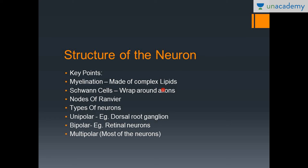Regarding myelination: myelin is a complex lipid made by Schwann cells that wrap around the axons. Myelin increases the transmission speed within the neuron. Where myelin is absent, those gaps are known as the nodes of Ranvier, which you can see in the next picture.